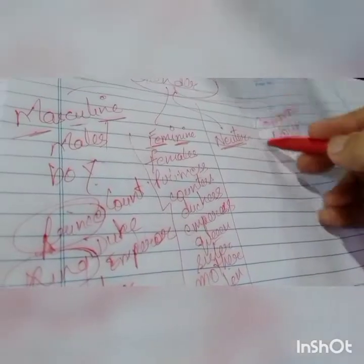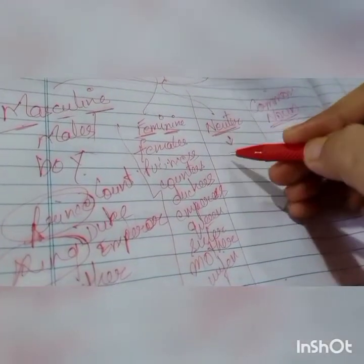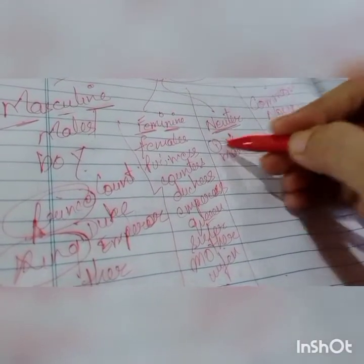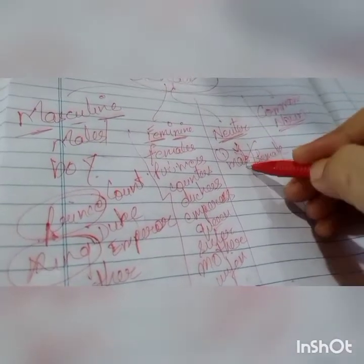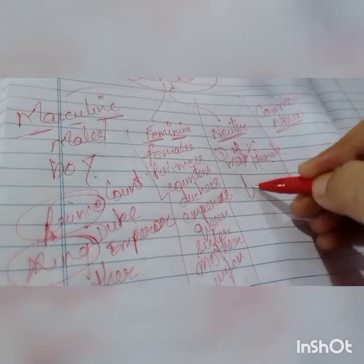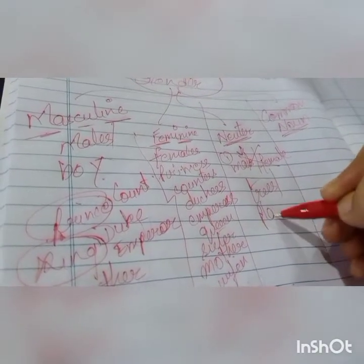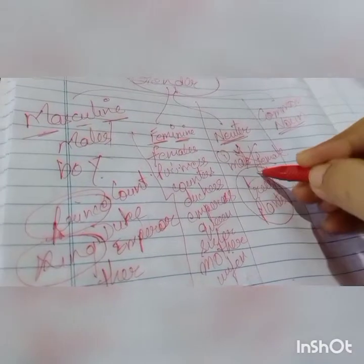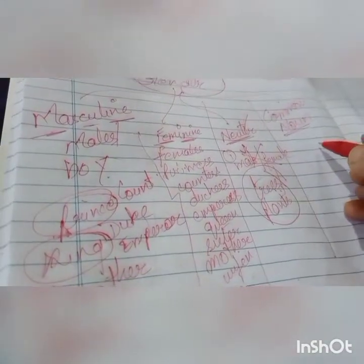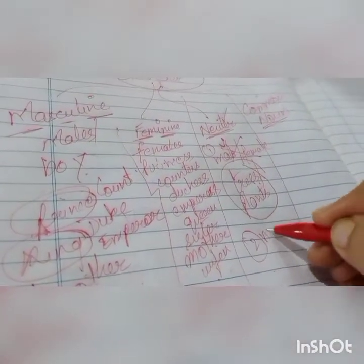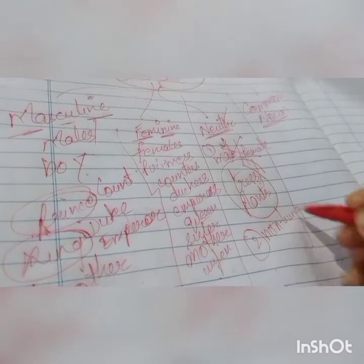Then the neuter category — which is neither male nor female. This is why non-living things go into the neuter category. All non-living things like table, chair, book, phone — everything comes under neuter.